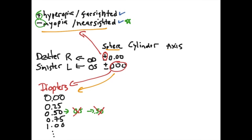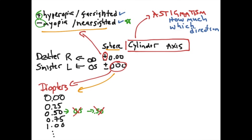The next two pieces of data — the cylinder and the axis — both refer to something known as astigmatism. The cylinder refers to how much astigmatism an individual has, and the axis refers to which direction the astigmatism is in. The cylinder value is written in the same notation as the sphere, with a minus sign in front and a diopter value describing the amount of astigmatism.